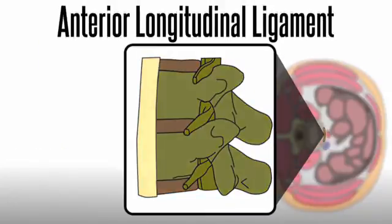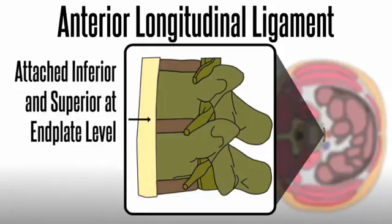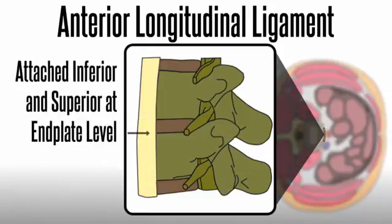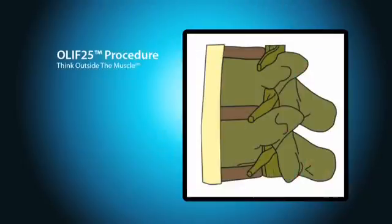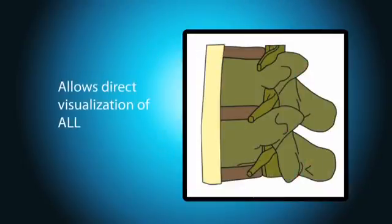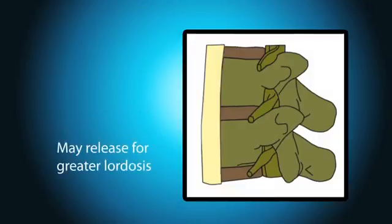The anterior longitudinal ligament is attached to each vertebral body inferiorly and superiorly at the end plate's level. OLIF-2-5 allows direct visualization of the ALL, and the surgeon may leave the ligament intact or release the ALL for greater lordosis.